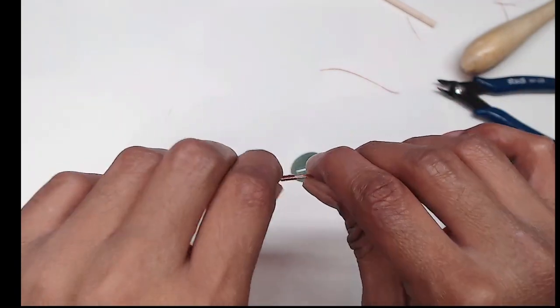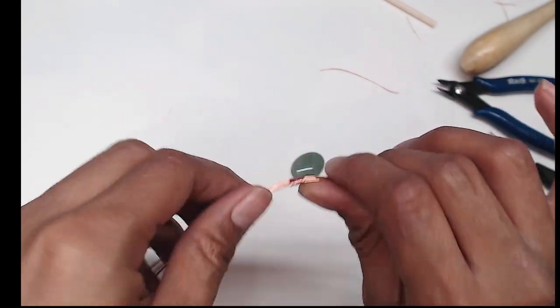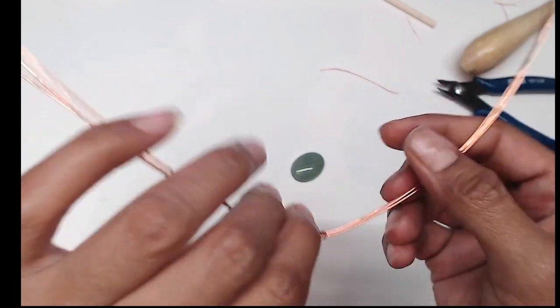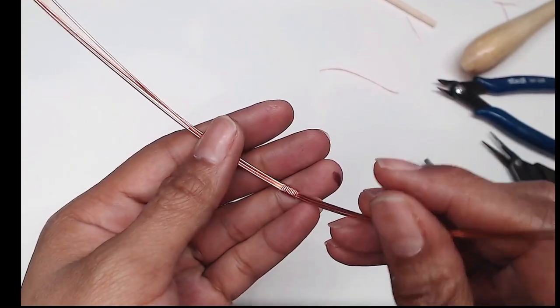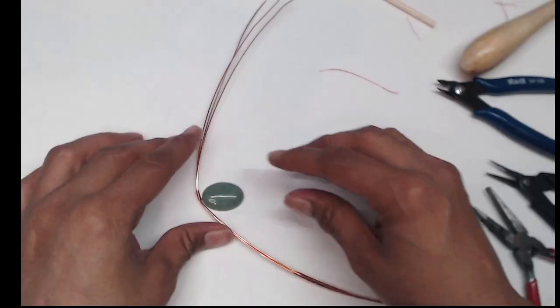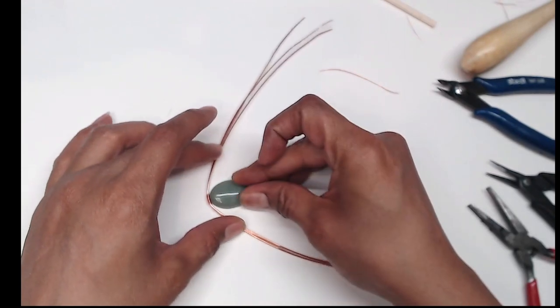Next you'll want to bend it to the shape a little bit of the cabochon that you'll be wrapping, and you want to make sure that the snippets that you snipped earlier are on the inside of it. This way when you do this it'll be hidden by the stone.